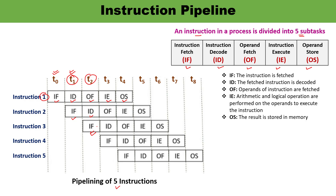This is how you can understand the concept of pipelining. One important thing to remember: no two instructions can execute the same stage at the same clock cycle. For example, instruction two and three cannot decode their instructions in the same clock cycle. I hope the concept of instruction pipelining is now clear. In the next video, I shall be talking about pipelining hazards. Thank you so much for watching.